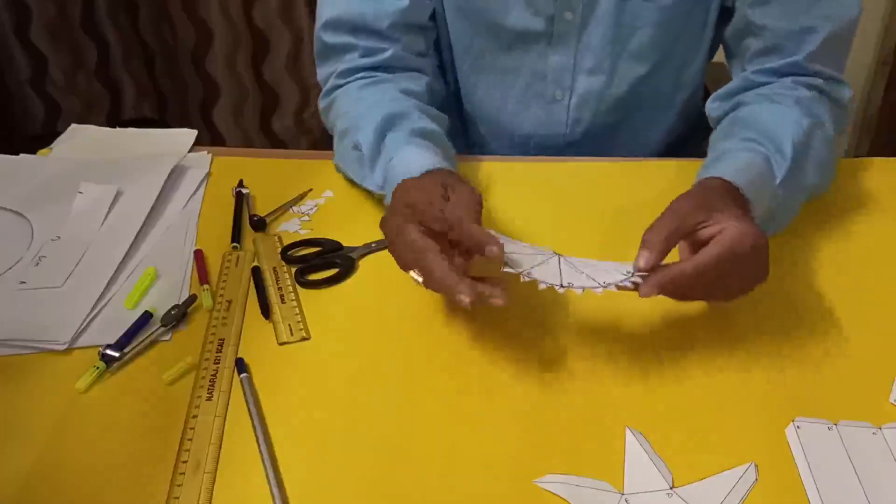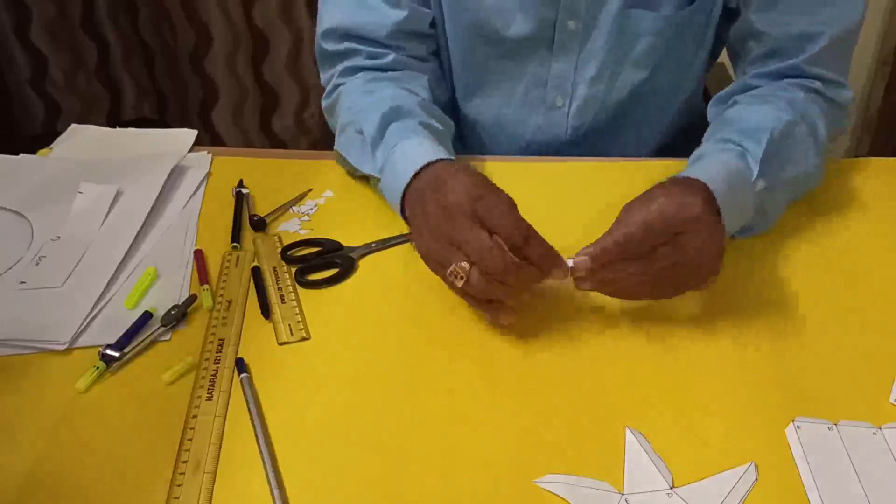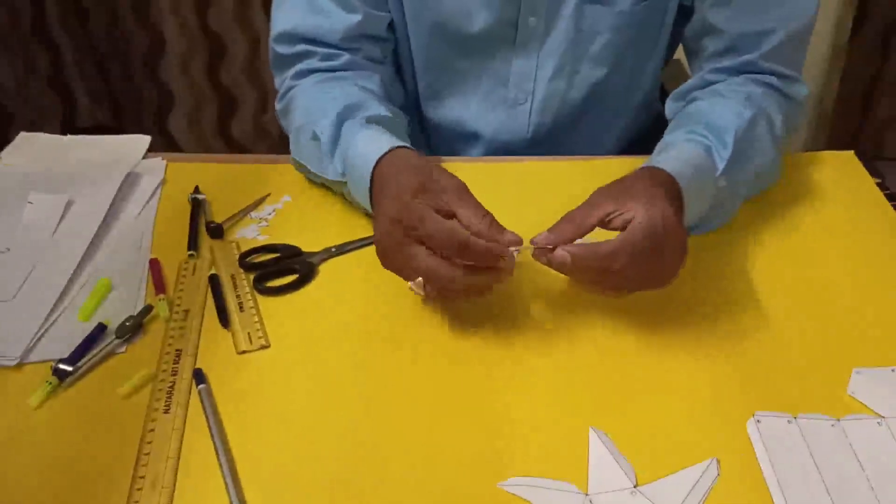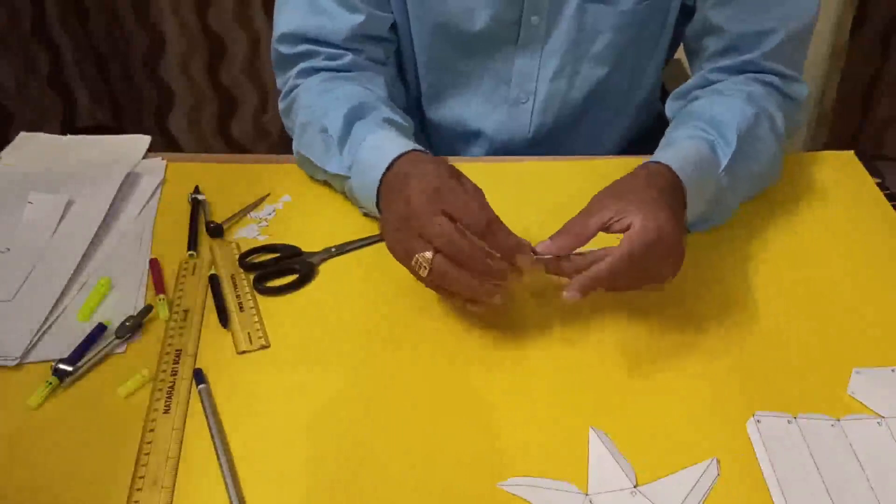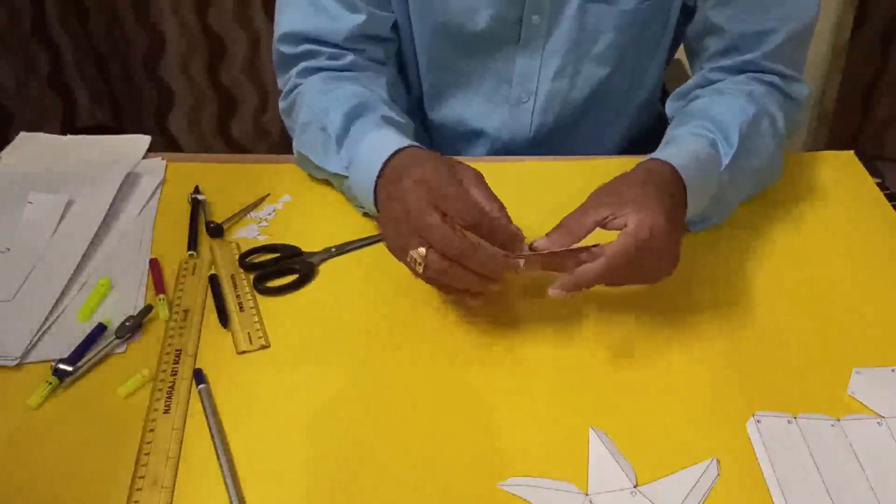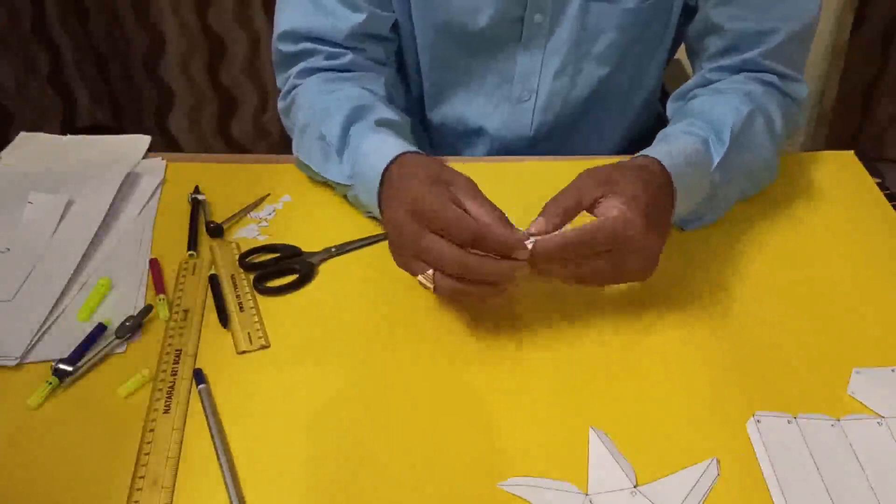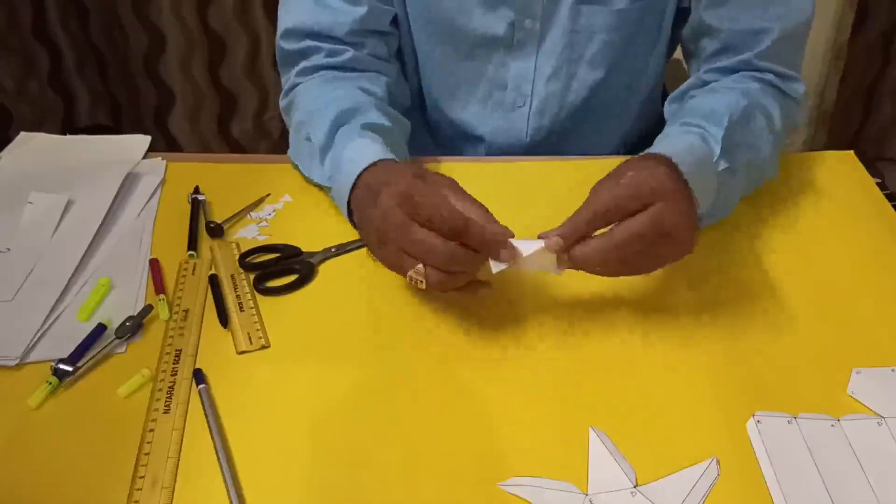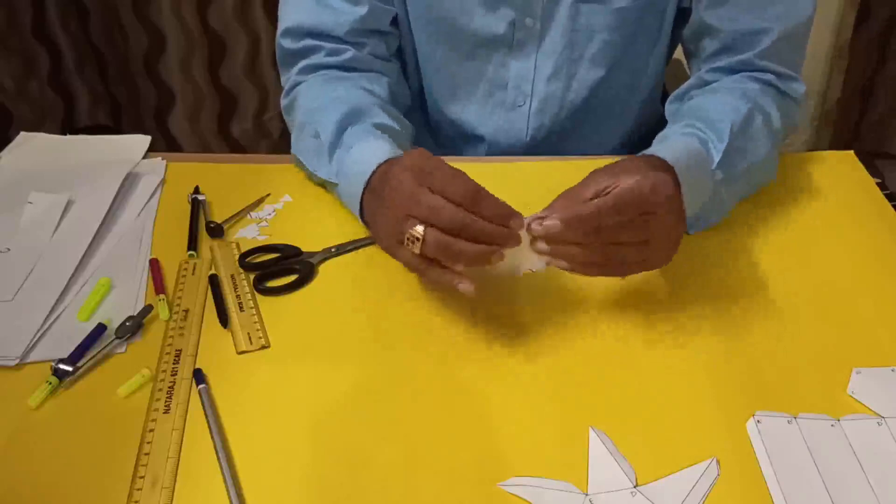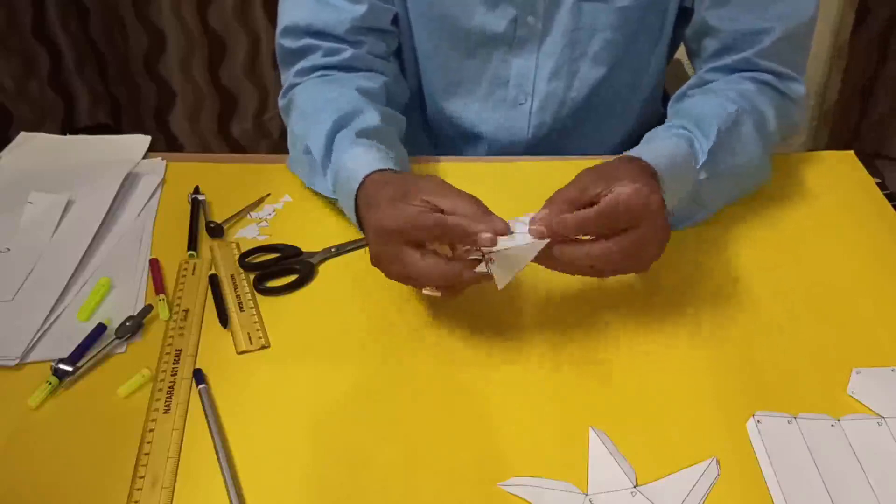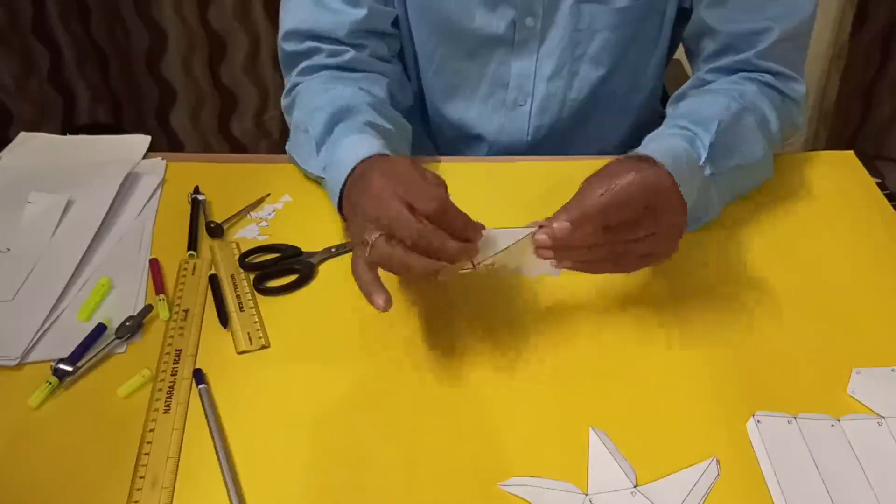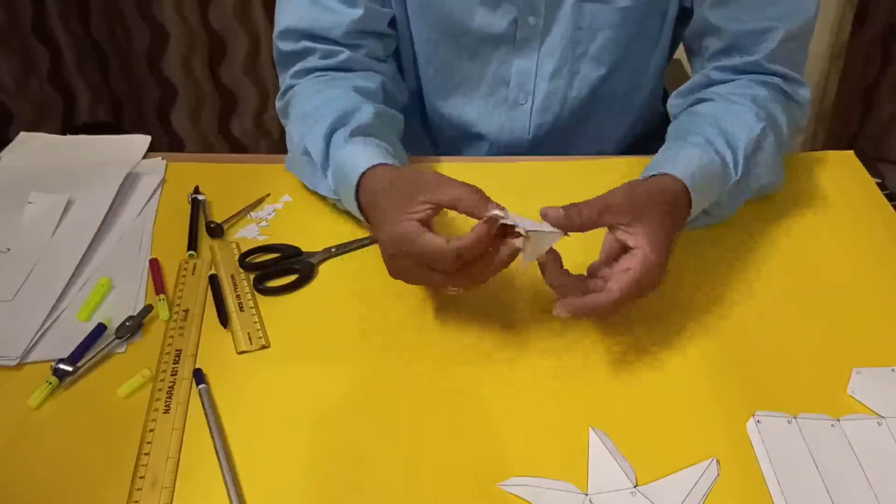This one looks like this. Now we will fold the border halfway. Six sides are there, so you have to fold one by one nicely.